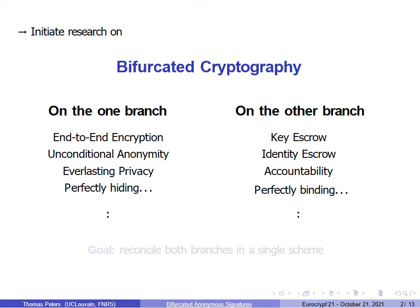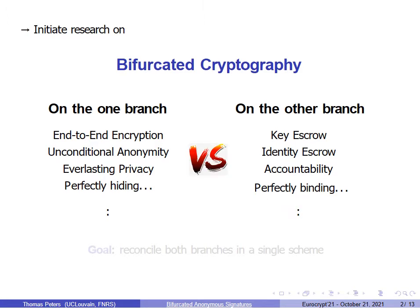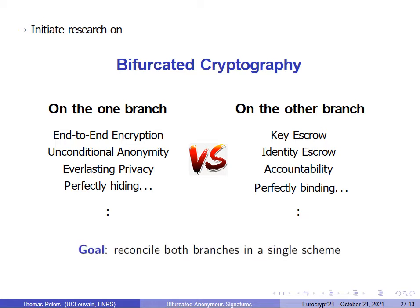Sometimes motivated by safety reasons. Each branch taken individually might be the best solution in some context, but both rigid solutions cannot live together, and it might sometimes lead to tensions. The goal of bifurcated cryptography is to make both branches live together in a single scheme in a flexible and user-friendly manner.